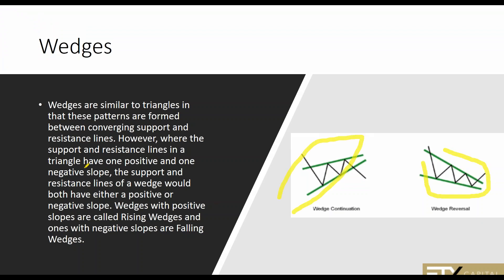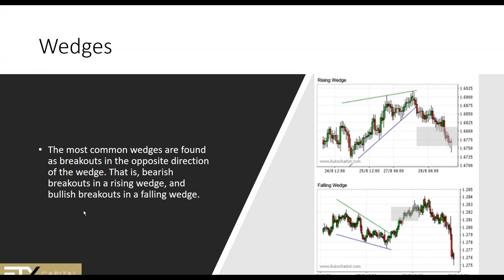The most common wedges are found as breakouts in the opposite direction of the wedge. When you have a wedge — and this also holds true for a triangle — most likely the breakout will be in the opposite direction of the current trend. So if we have a rising wedge, we get the breakout and see the end of the uptrend. With a falling wedge, we get the breakout in the opposite direction and the end of that trend. This could give us a very nice trade at the breakout level.